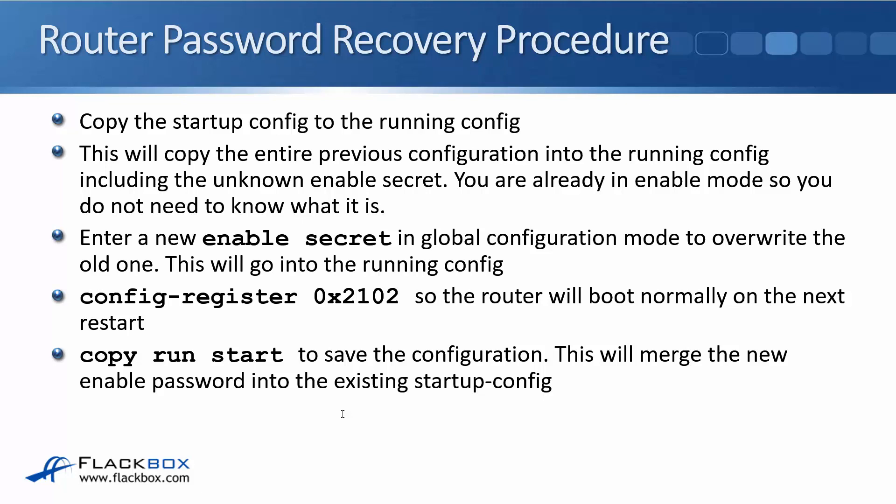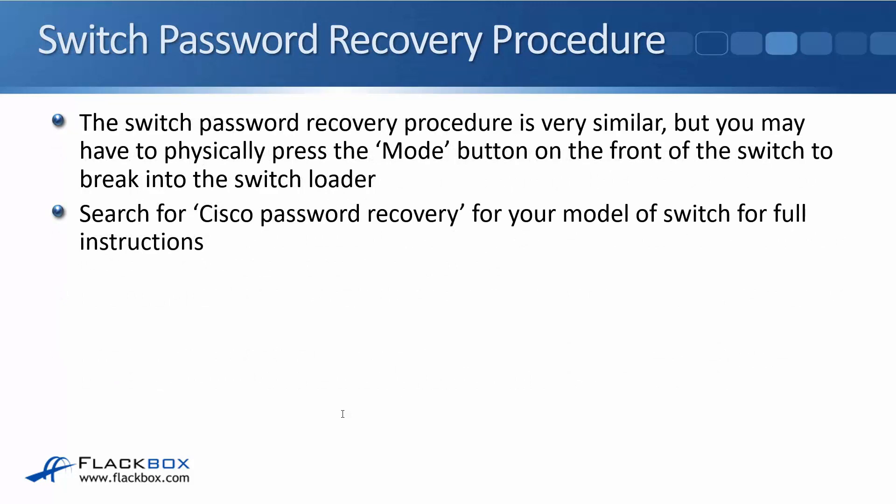And lastly, copy run start to save the configuration, and you're now back to where you started — except you're logged in and you've got a new enable secret. So that's how we do the recovery procedure on a router. If you're on a switch, it can be a little bit different depending on the model. So whatever kind of device you need to recover, it will be very similar to those instructions, but might be slightly different. Google to get the instructions and just follow them to do the password recovery. Let's have a look at how to do this in the lab next.